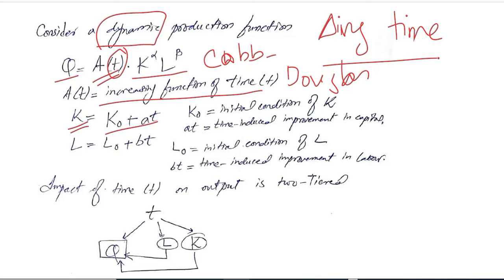And then K capital is not just a simple function. It is composed of two parts. One is the K naught, that is the initial condition of K. That what is the level of capital when we begin the analysis? That is now.